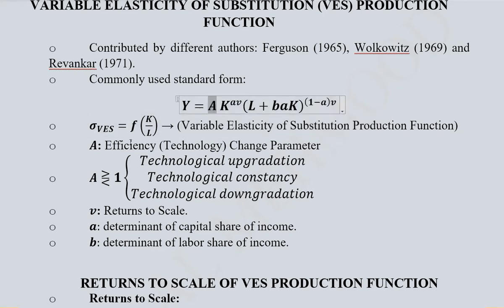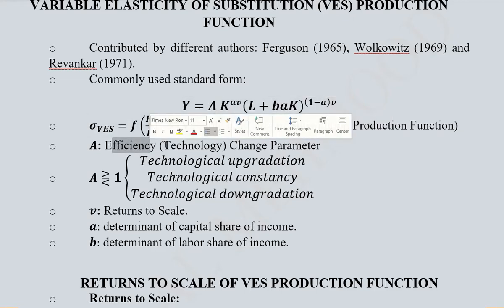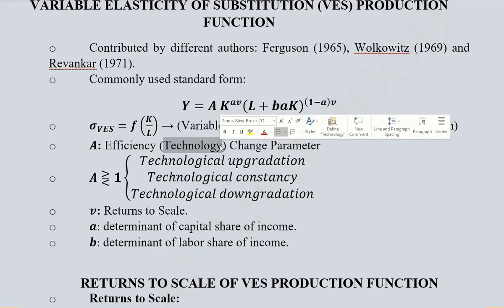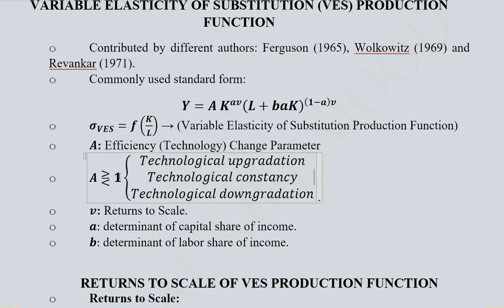The parameter A is the efficiency parameter, mainly determined by the state of technology and how it affects the production function. If A equals 1, there is technological constancy—the technology remains the same and its role is neutral. If A is greater than 1, there is technological upgradation, and the same labor and capital can produce more than before.